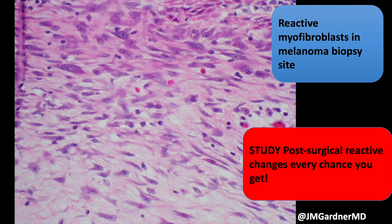Here's an example of reactive myofibroblasts from a melanoma biopsy site — they can look quite unusual. The purplish amphiphilic cytoplasm is a helpful clue for myofibroblasts. I strongly recommend that trainees study post-surgical reactive changes every chance they get, to understand how weird and wild reactive myofibroblasts can sometimes look.